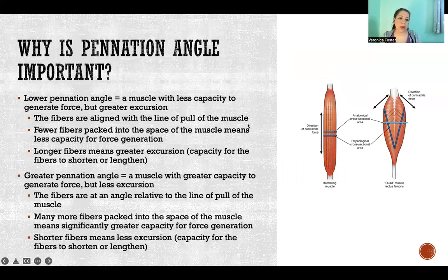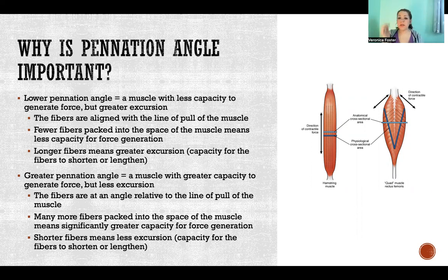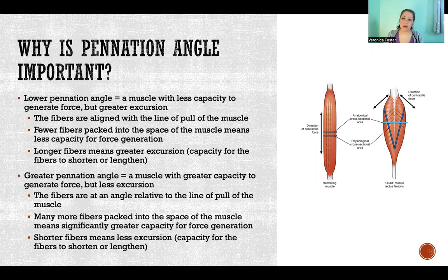So why does it matter? Why do we care about the penation angle? The lower the penation angle is, the less capacity that muscle will have to generate force compared to a muscle with a greater penation angle. It also means that muscle will have a greater excursion — the capacity for that muscle or its fibers to shorten or lengthen. A muscle with fibers going in the same direction as the longitudinal axis will have longer fibers, giving it a greater capacity to shorten and lengthen. Shorter fibers, as seen with greater penation angles, will have less excursion.